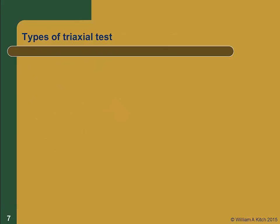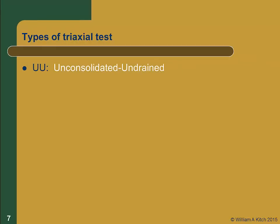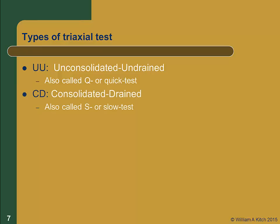We use a two-letter designation to identify the different types of triaxial tests. The first letter specifies the drainage conditions during the consolidation phase, and the second letter specifies the drainage conditions during the shear phase. The UU test is an unconsolidated undrained test; the drainage valve is always closed. This is a total stress test and is also called a Q or quick test since we do not have to wait for consolidation or drainage during shear. The CD test is a consolidated drained test; the drainage valve is always open. This is an effective stress test since no excess pore pressures are allowed to accumulate. It is also called an S or slow test since we must wait for consolidation to complete during phase 1 and shear the specimen slowly during phase 2 so that no excess pore pressures are generated.